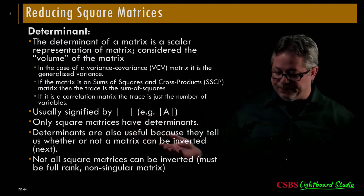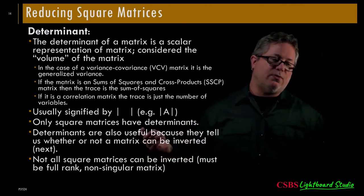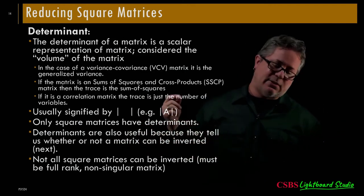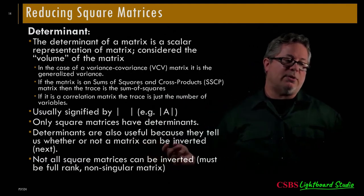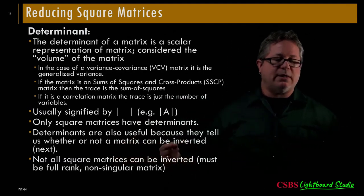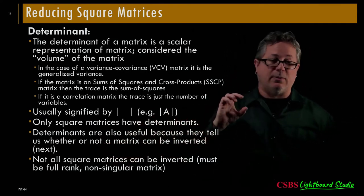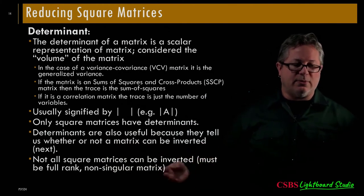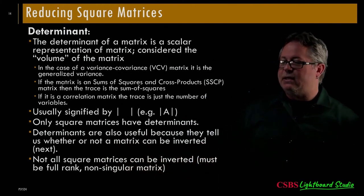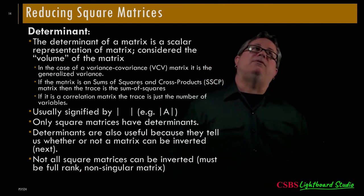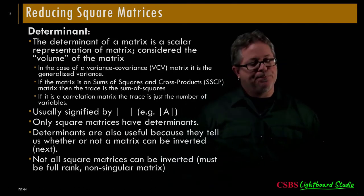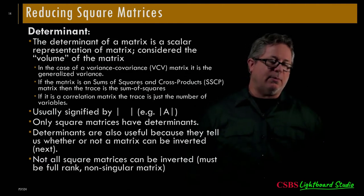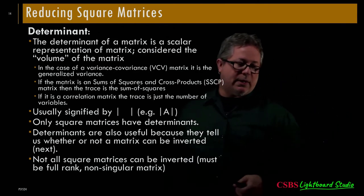Only square matrices have determinants — the same is true for the trace. If the determinant of a matrix comes back as zero, that means the matrix cannot be inverted. Not all square matrices can be inverted — they must be full rank, meaning non-singular with non-overlapping, non-correlated vectors. The determinant is predominantly used to help you invert a matrix, which is how we do matrix division.